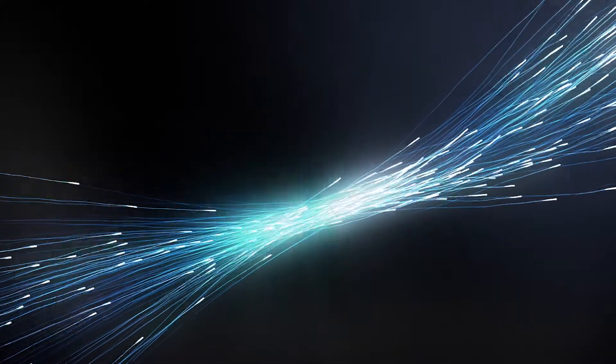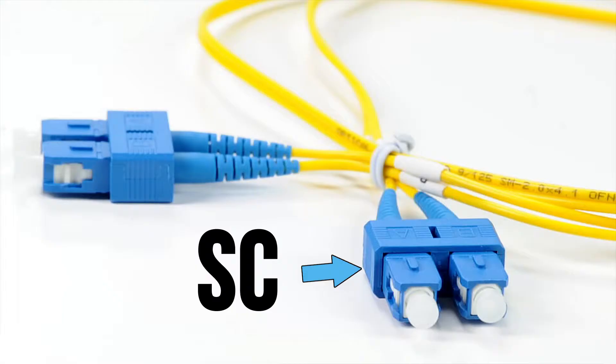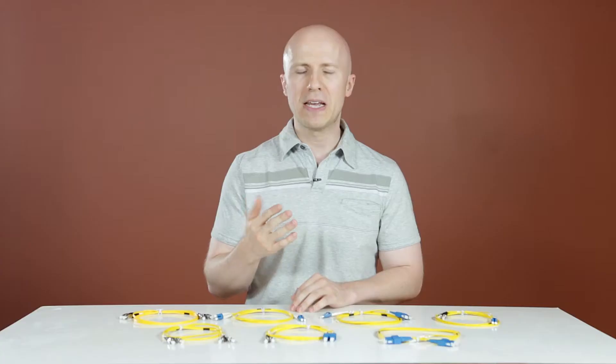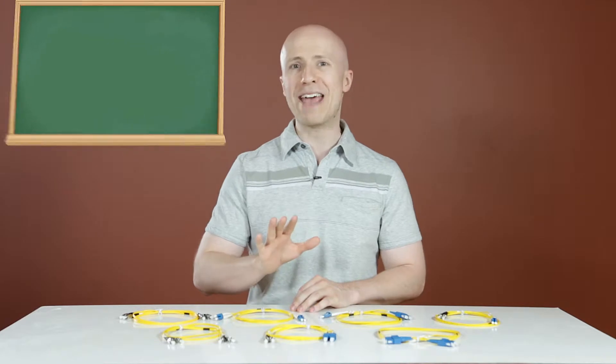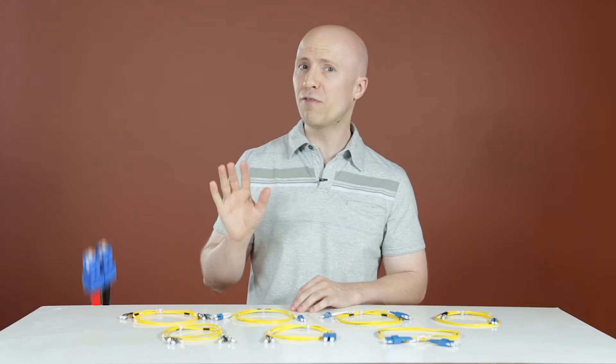Single-mode fiber cables come in a variety of connector types: SC, FC, ST, LC, and MTRJ. Single-mode fiber cables have a diameter of 9/125 microns and can transmit data up to 50 times farther than multi-mode fiber cables.